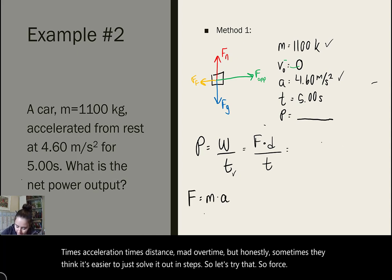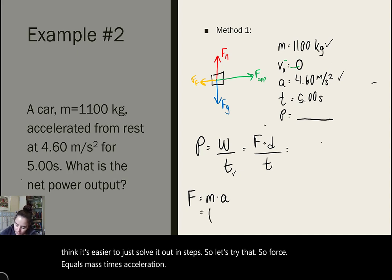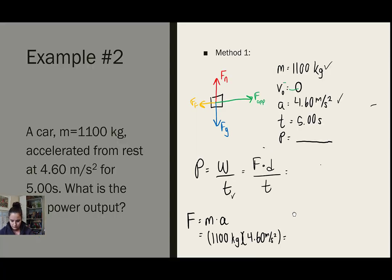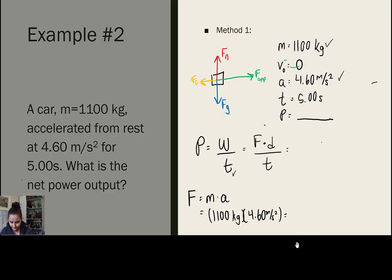Force equals mass times acceleration. So, we have 1100 kilograms times 4.60 meters per second squared. That gives us 5,060 newtons. That gives us the force.